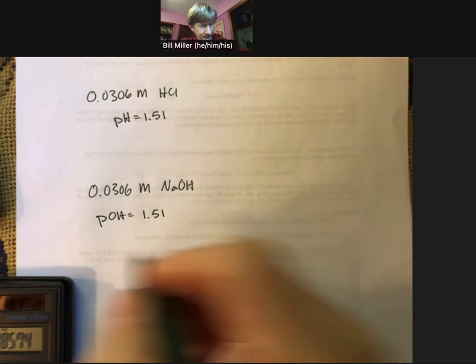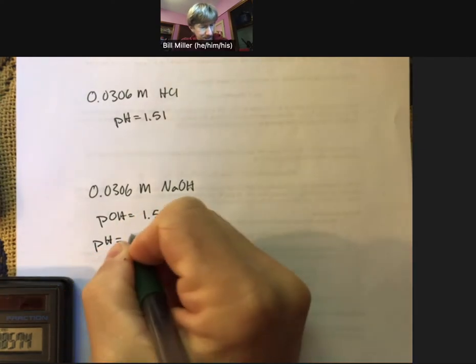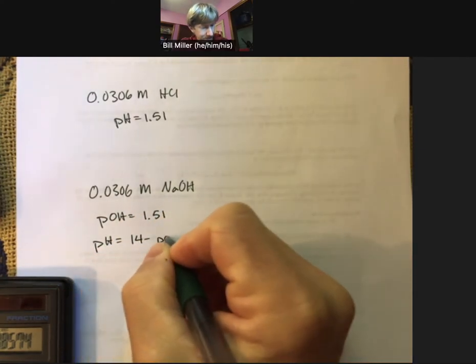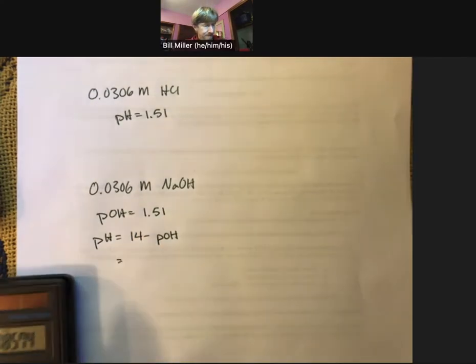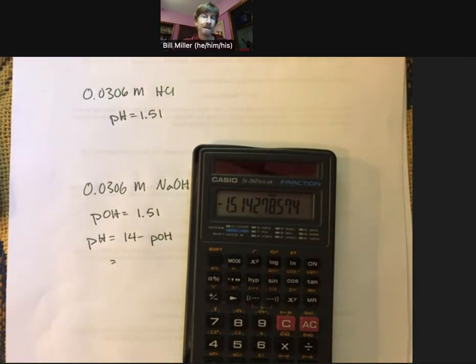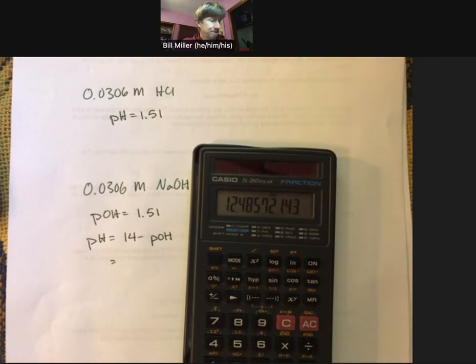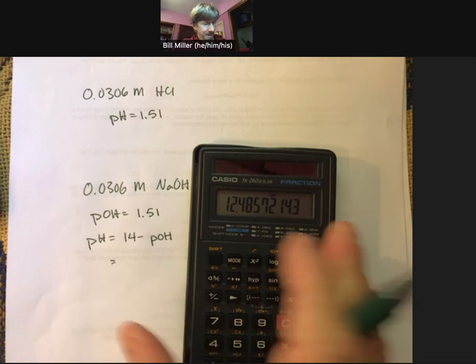Then pH equals 14 minus that number. Since my calculator already has the minus sign in it, I'm going to add 14, and you should get 12.49 rounded as your pH.